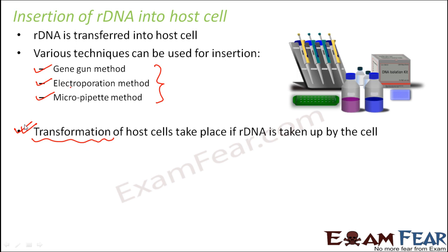How do we distinguish between the transformants and the non-transformants? We allow the entire culture to grow in the presence of an antibiotic - for example, ampicillin. If the recombinant DNA enters into the host cell, the host cell will be resistant to ampicillin. If it has not entered, that is the other option.